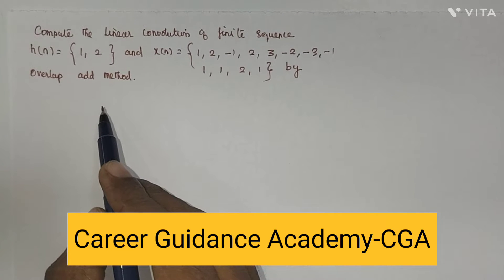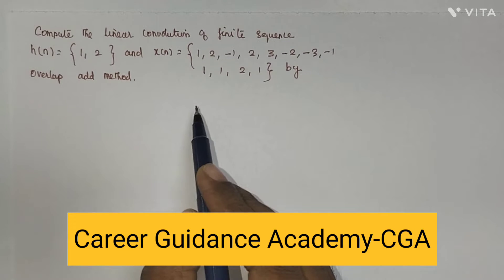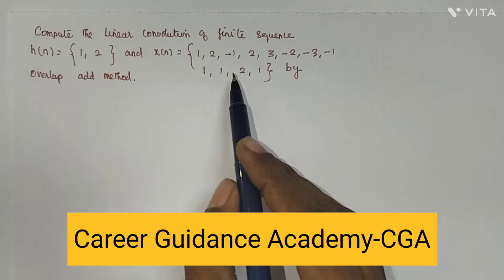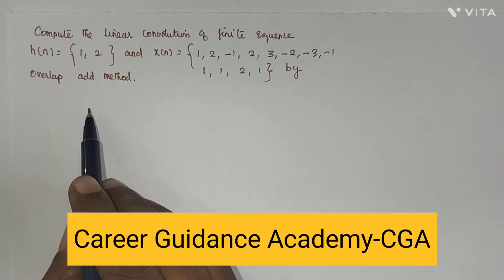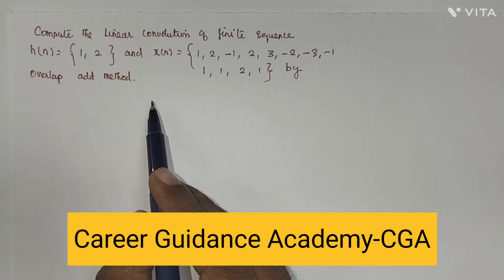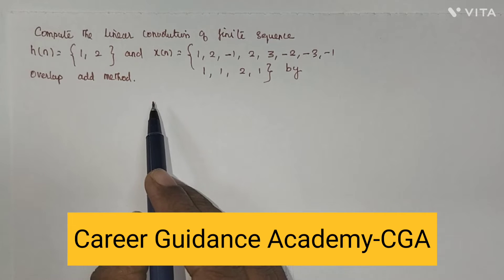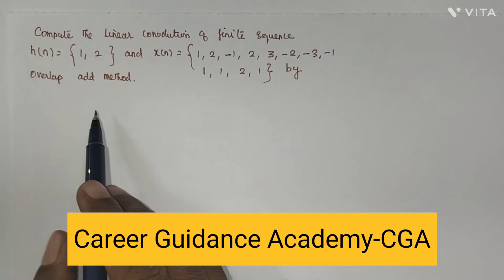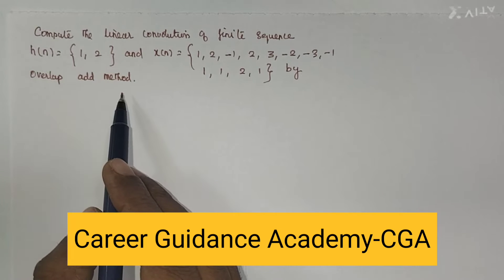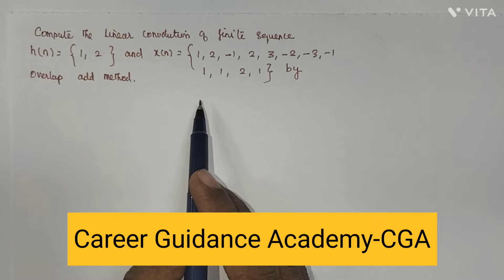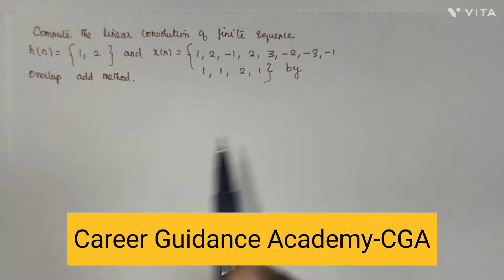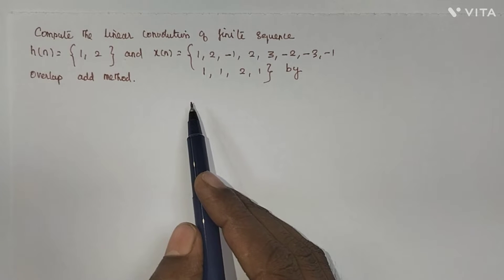Hello viewers. In the last video we have seen how to compute the linear convolution for a given input sequence and the impulse response of the system using the overlap-save method. In overlap-save method, we add the m minus 1 prefix term to the subdivided term, then discard the m minus 1 term to find the output sequence. Whereas in the overlap-add method, we add m minus 1 zeros as a suffix instead.